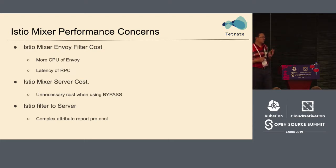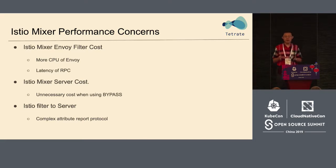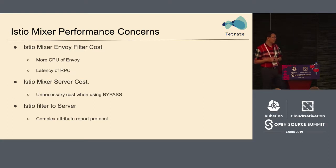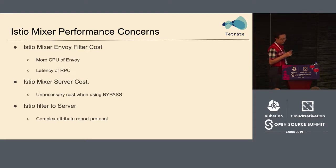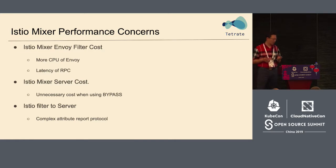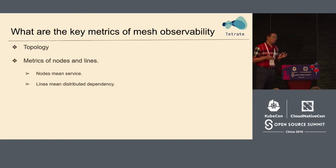A second concern is that when using bypass, there would be unnecessary cost. Even if it's just a little more cost, people still consider it unnecessary. A third concern is the Istio filter-to-server protocol, which is quite complex — it uses a complex attribute report protocol. Istio's team is trying to lower the complexity, but it's still not user-friendly enough.